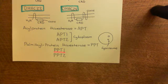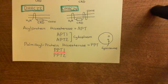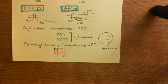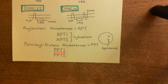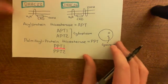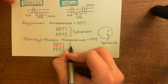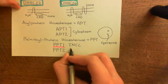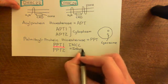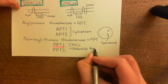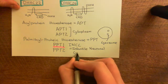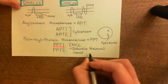Without functional PPT1, you get a buildup of proteins within cells, which is particularly harmful in the brain where it causes death of neurons and gradual neurodegeneration. The disease caused by biallelic loss-of-function mutations in the PPT1 gene is called infantile neuronal ceroid lipofuscinosis, abbreviated INCL — I for infantile, N for neuronal, C for ceroid, L for lipofuscinosis.